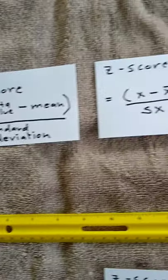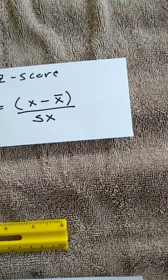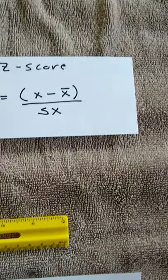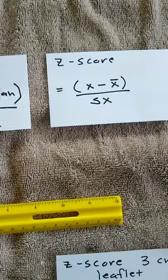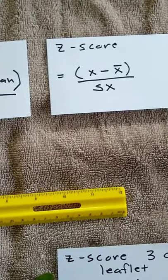In symbols, we would write that as parenthesis, x minus x-bar, close parenthesis, divided by the standard deviation, sx. Those parentheses are very important. A common student mistake is to leave off the parentheses when calculating the z-score.